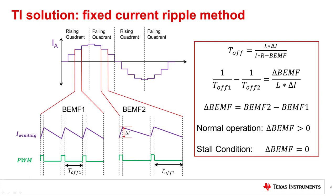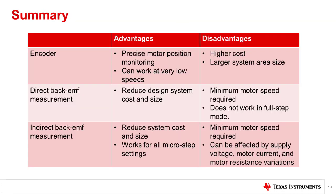To look at a device which implements this stall detection algorithm, search for the DRV8889-Q1 on the ti.com website. Detecting when a motor stalls or reaches a fixed mechanical stop or end of line travel can greatly benefit many industrial and automotive systems. Stall detection helps prevent potential mechanical failures that can occur when a motor is overdriven past an obstacle.